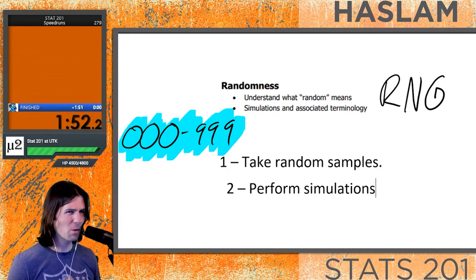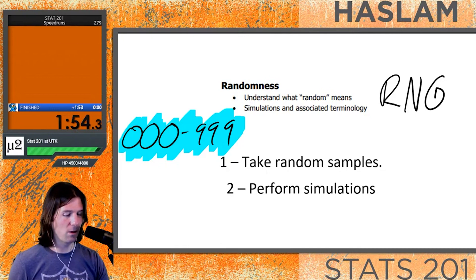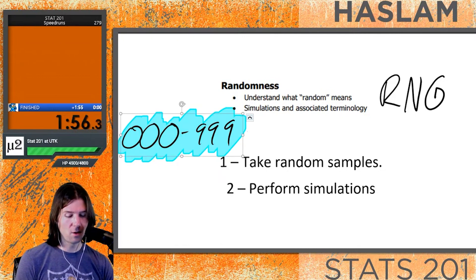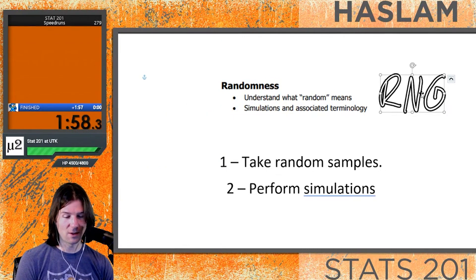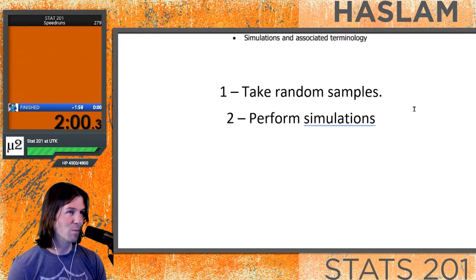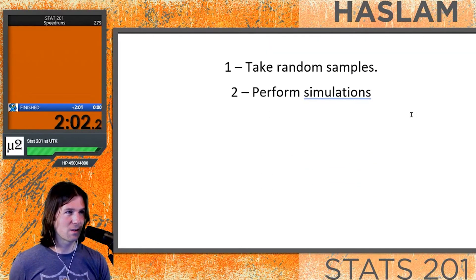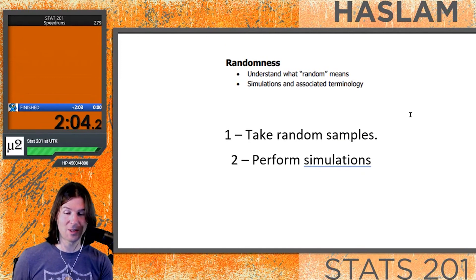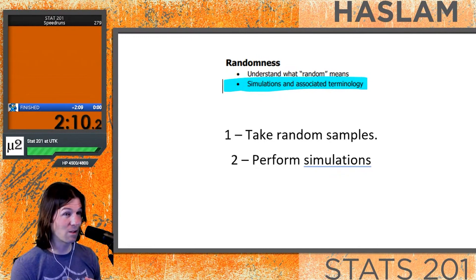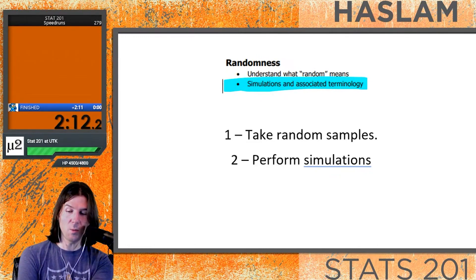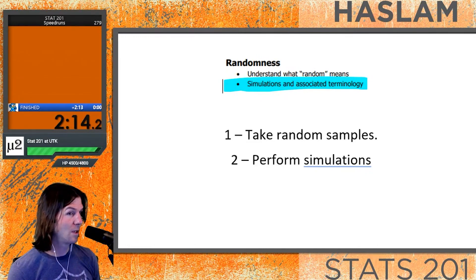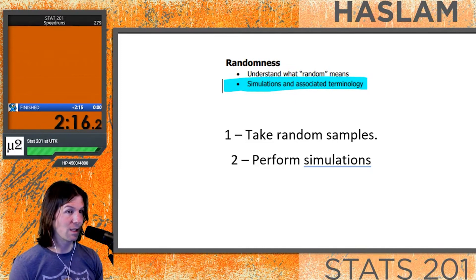Let's say you want to play scratch off tickets. Always gamble at your own risk, but we like to use things like lottery and probability to talk about simulations. If you have a 20% chance of winning on a scratch off ticket, how could we use random numbers to generate lottery tickets to see if you win?